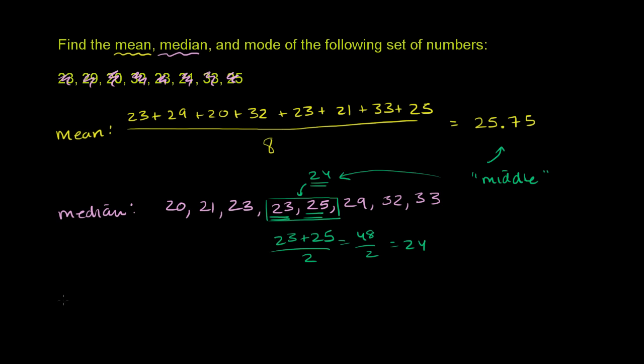Then finally, we can think about the mode. The mode is just the number that shows up the most in this data set. All of these numbers show up once, except we have the 23—it shows up twice. And so because 23 shows up the most, it shows up twice, every other number only shows up once, 23 is our mode.